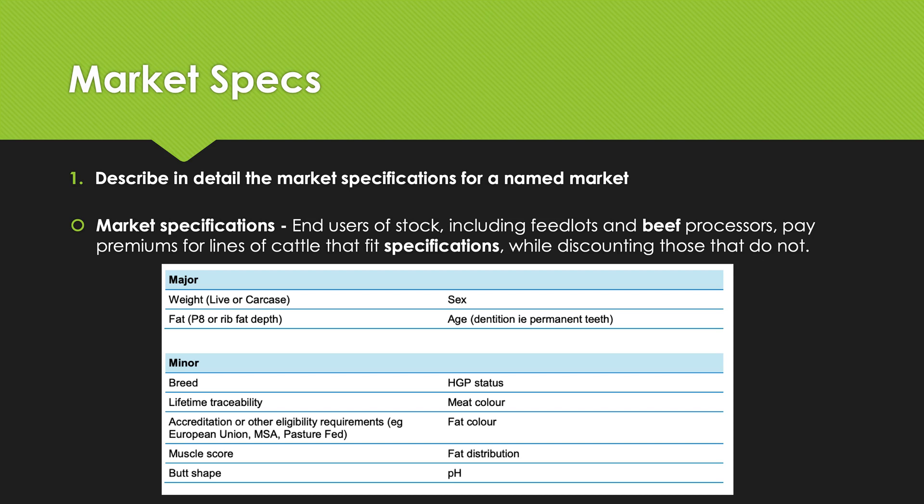Market specifications are the end users of stock, including feedlots and beef processors, which pay premiums for lines of cattle that fit these specifications while discounting those that do not. So in other words, if you meet your specifications, you get the maximum price for your cow and your beef. If you don't, and you try and sell it to that market, they're going to give you a discount on that. They're not going to pay you full price.